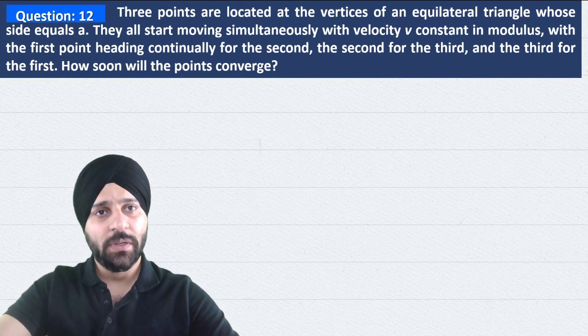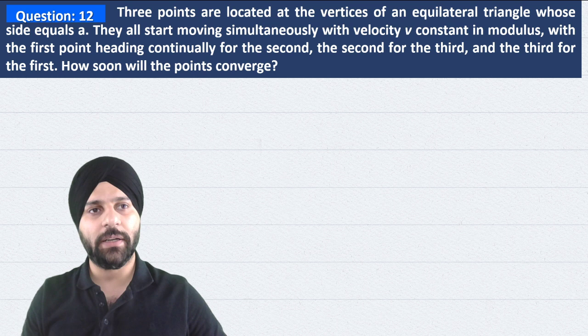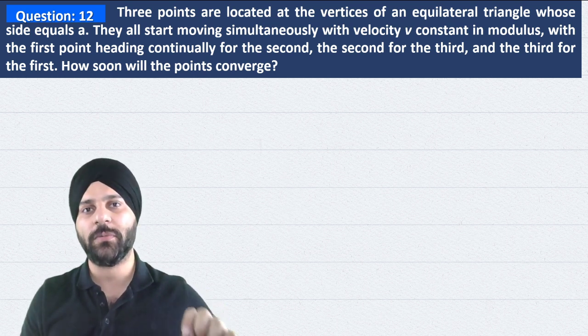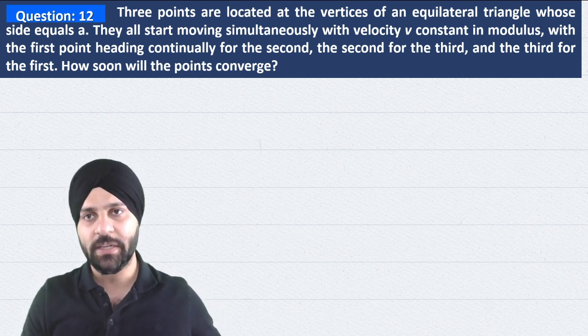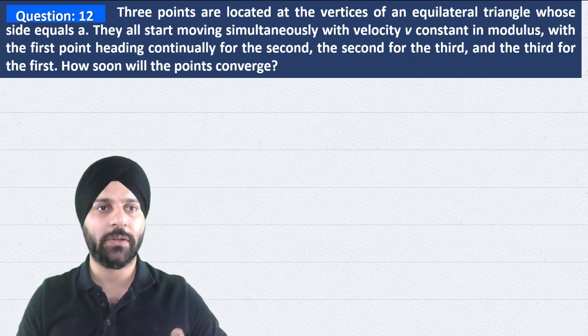Question number 12. Students, three points are located at the vertices of an equilateral triangle whose side is a. They all start moving simultaneously with constant speed, with the first point towards second, second towards third, and third towards first.